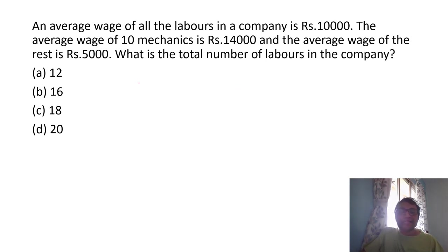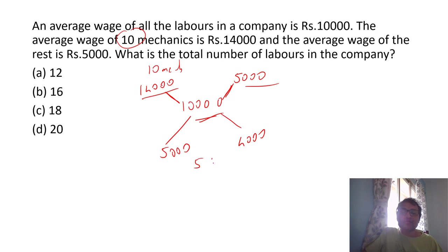Average wage of all the laborers of a company is 10,000. 10,000 is overall average. 10 mechanics whose is 14,000 and rest is 5,000. So average you always put in between mechanics here and rest here. You can make 10 mechanics. 10 mechanics is different between these two, which is 5,000. And different between these two is 4,000 will become 8. You can directly make out 18 or you do allegation. This is 5,000. This is 4,000. You get a ratio as 5 is to 4. 5 stands for 10 mechanics. So 8 will be rest. So total will become 18.